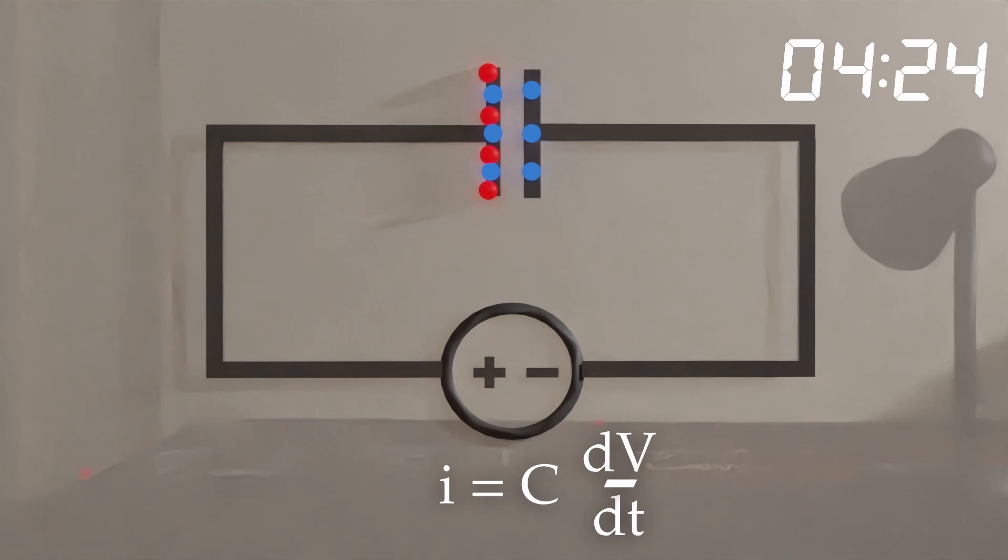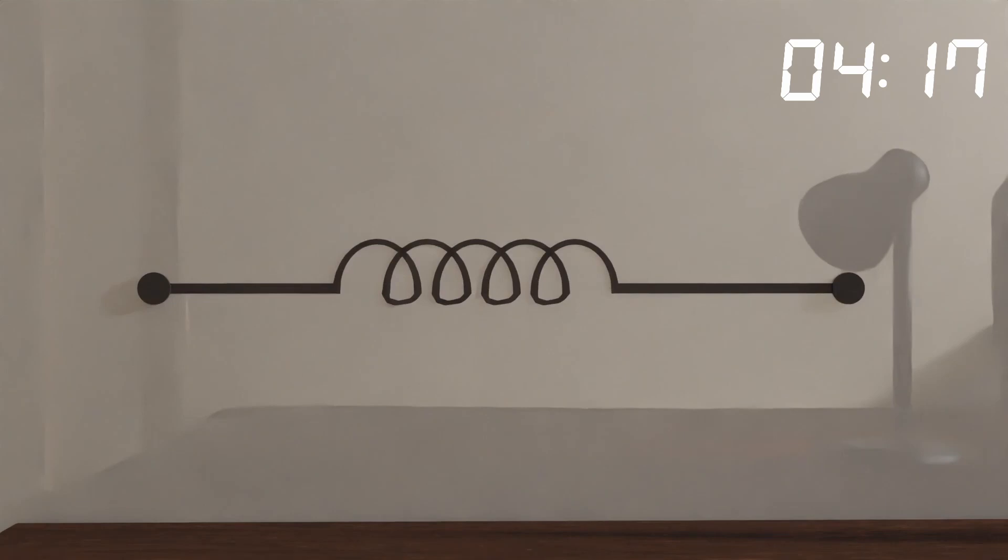The ratio of current to change in voltage is called the capacitance C. The inductor is very simple, but here, instead of the current increasing the changing voltage, now the voltage increases the changing current. In this case, the ratio is called the inductance L.